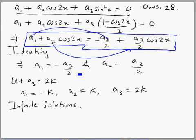Now if we assume a₃ equals 2k, then a₁ is minus k and a₂ is k and a₃ is 2k. And now you can see we need to find the values triplet a₁, a₂, a₃ can take, and you can see the answer is infinite.